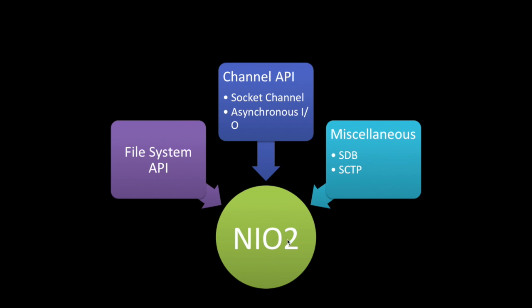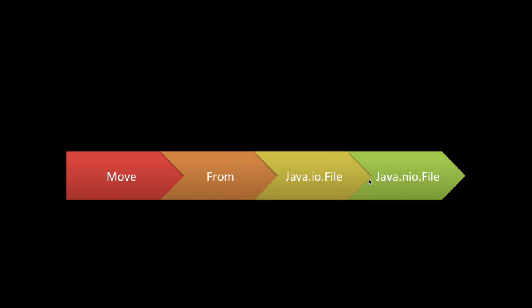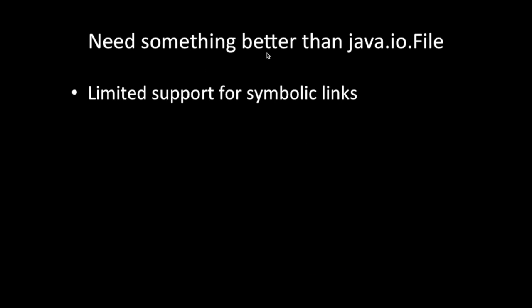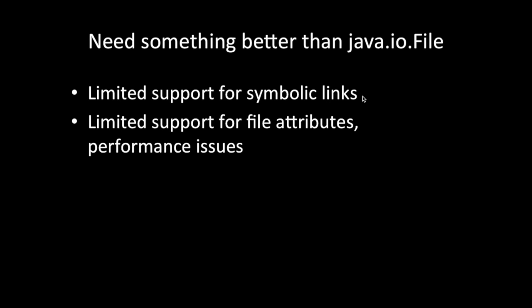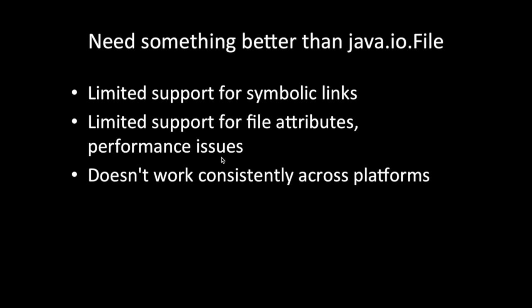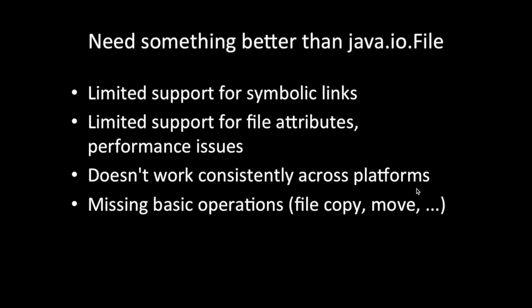The purpose of NIO2 is to move from java.io.file to java.nio.file. This is one objective achieved in JDK7: a new file API that is more efficient than java.io.file. What was missing in the old API includes limited support for symbolic links, limited support for file attributes, performance issues, inconsistency across platforms, and missing basic operations like file copy and move.